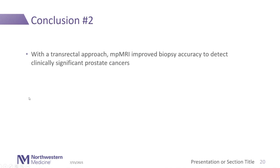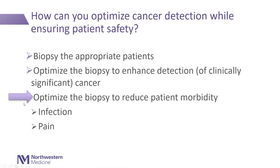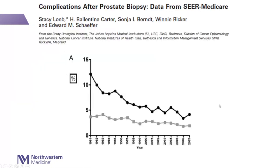MP-MRI can enhance the accuracy of detection of clinically significant prostate cancers with the transrectal approach. Those are arguments for tiered screening and using MRI to enhance detection. What about reducing patient morbidity? Transrectal approaches have a possibility of infection, and with almost all biopsies we're putting a probe in the rectum and sampling the prostate — there's pain associated with the procedure. How can we optimize our approach to reduce this morbidity?